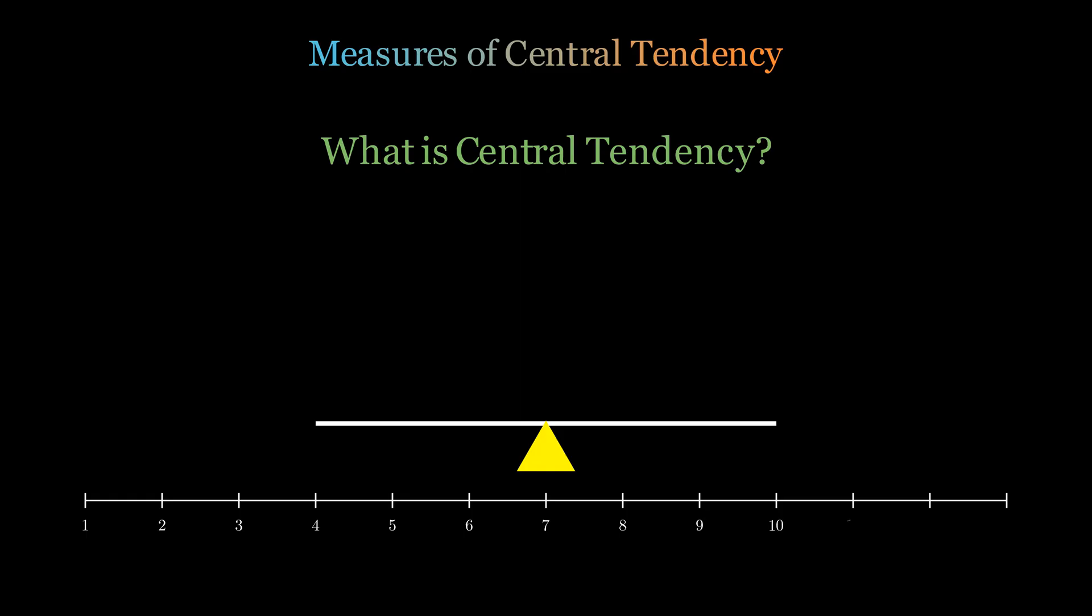Central tendency measures help us find the equilibrium of our dataset. Let's visualize this with test scores: 2, 3, 4, 4, 5, 5, 5, 6, 7, 8, and 12. Where do you think the center of this data lies? Is it influenced more by the cluster of scores around 5, or pulled toward that outlier score of 12?